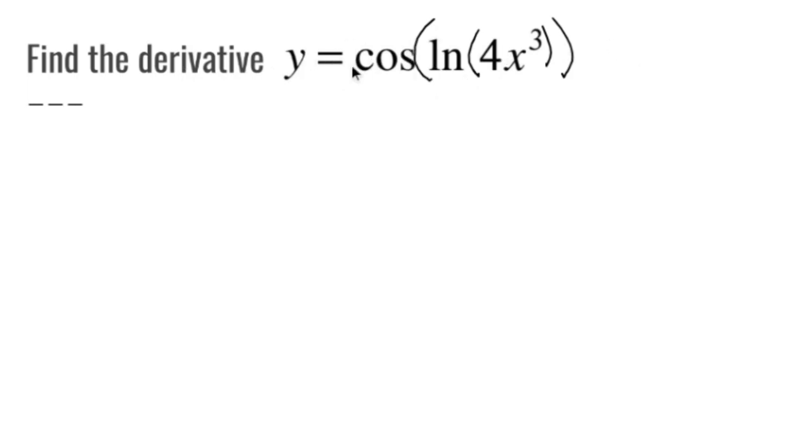We start out with cosine of stuff. When you're taking the chain rule, you take the derivative of the outside. So the derivative of cosine is negative sine. Keep the inside, so ln of four x cubed. And then multiply the whole thing by the derivative of the inside stuff.